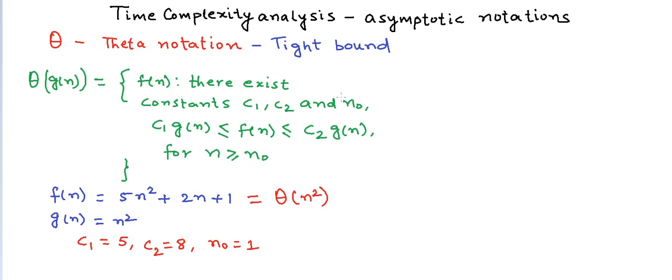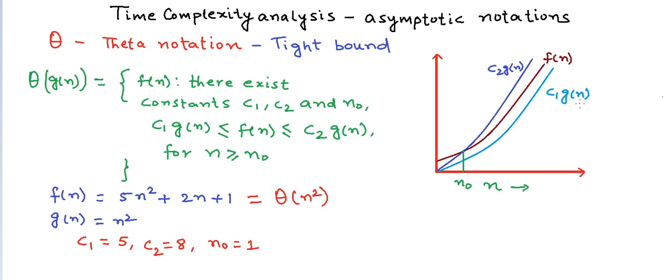Let's now plot this on a graph. We can see that f(n) is bounded by two functions: c1·g(n) and c2·g(n) after n = n₀. So f(n) always lies between these two functions.